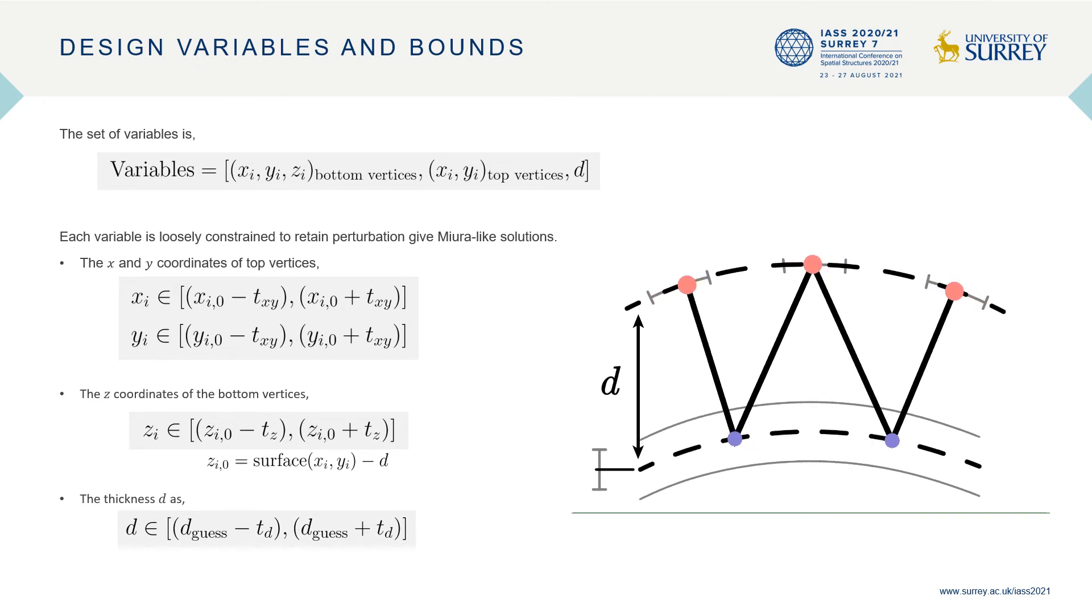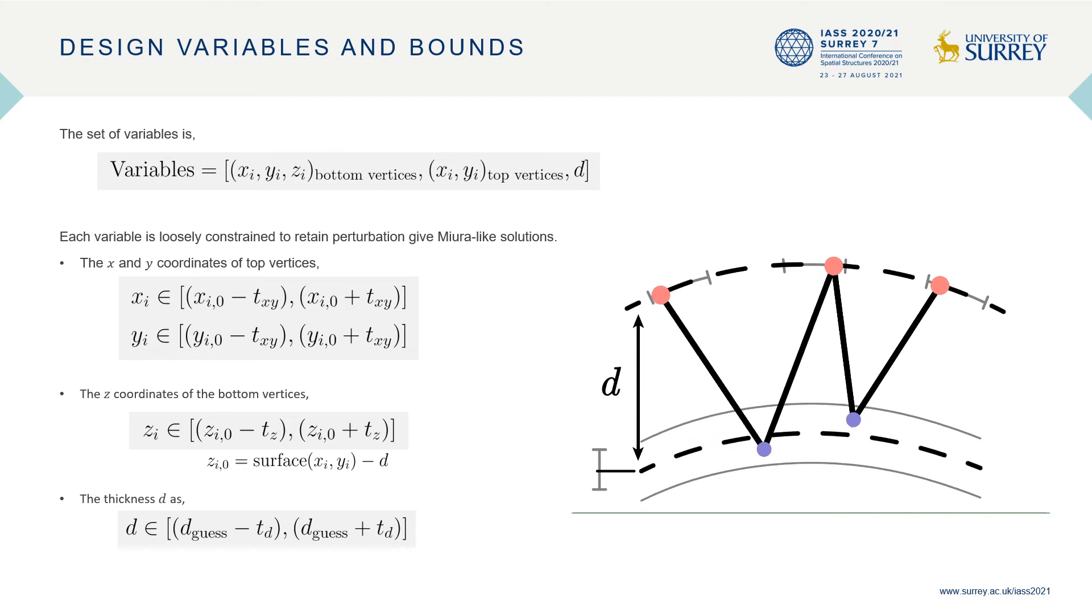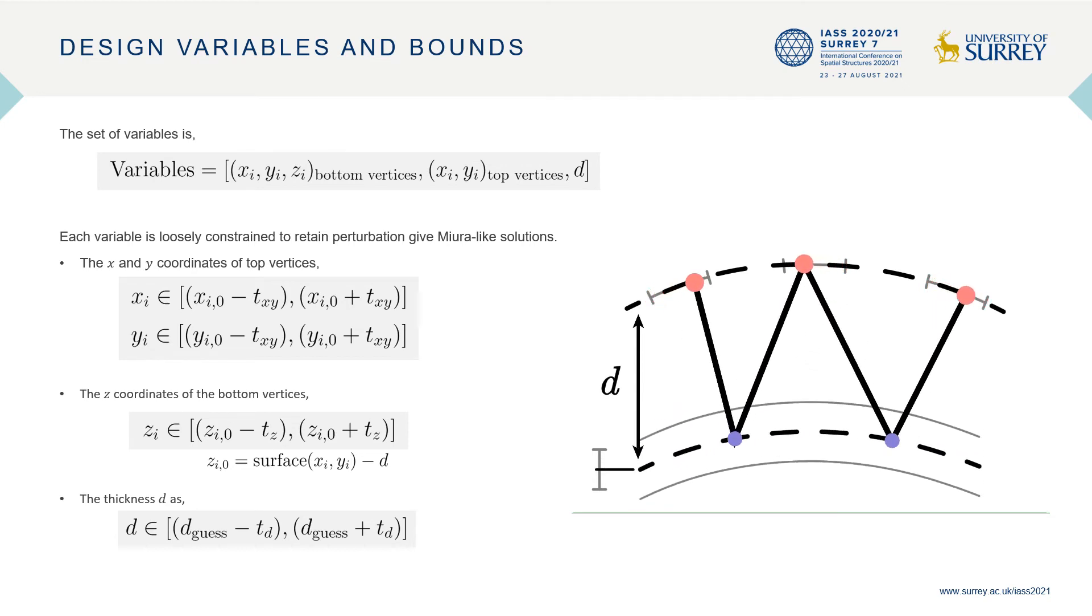The offset surface location itself, which is defined by the thickness variable d, is allowed to vary by 2td from the initial guess position. Overall, the variability of the system as it tries to satisfy the constraint equations is depicted through this schematic animation.